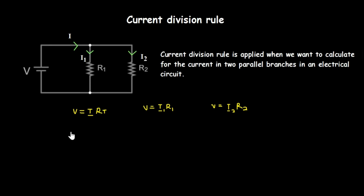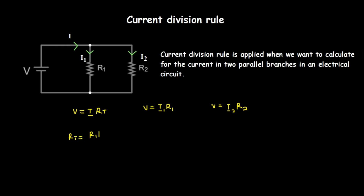Next, we need to calculate the total resistance R_t in the circuit. Since the two resistors are in a parallel connection, we use the formula for effective resistance of two parallel resistors: R_t equals R1 times R2 divided by R1 plus R2.